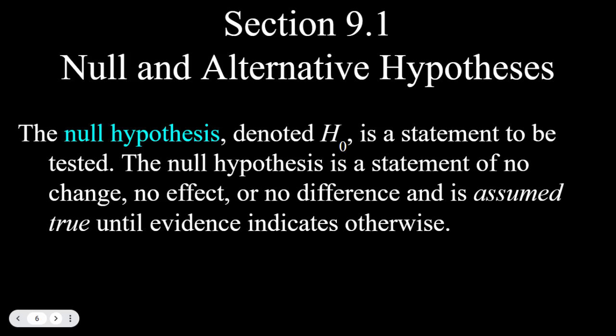We're going to make two statements. The first is the null hypothesis, denoted H sub 0. This is a statement that is going to be tested. The null hypothesis is a statement of no change, no effect, or no difference, and is assumed to be true until the evidence indicates otherwise. It will always have an equal sign in it — the mean equals something, the standard deviation equals something, or the proportion equals something.